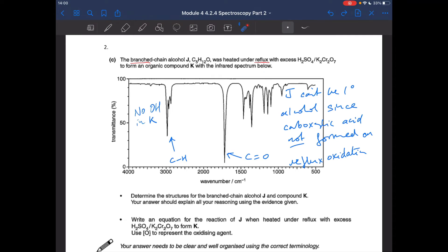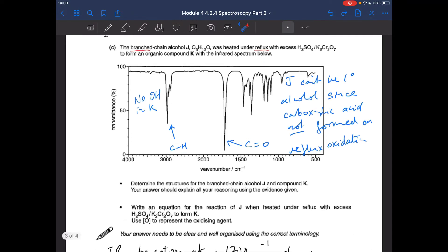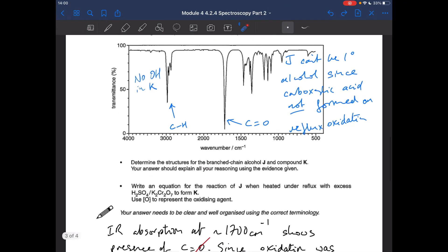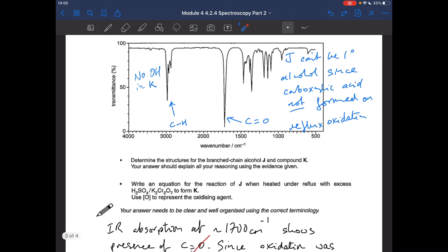So because it was done under reflux, I can say J can't be primary, like a primary alcohol, because you would have got a carboxylic acid and we haven't because of the lack of the OH group. So we can go into the answer now. So we've got to determine the structure for the branched chain alcohol J and compound K and explain, link it all to the evidence given. And then write an equation for the reaction of J when heated under reflux with excess oxidizing agent to form K.